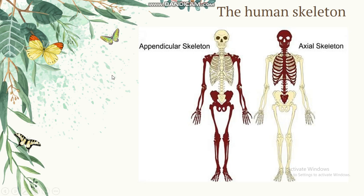The human skeletal system can be divided into two. They are the axial skeleton, which means rangka kepala dan rangka badan, and also the appendicular skeleton, which means rangka anggota gerak.